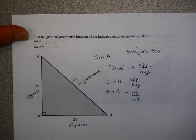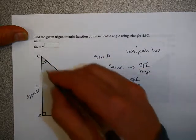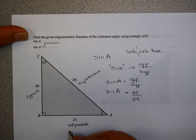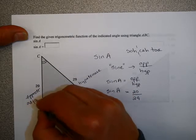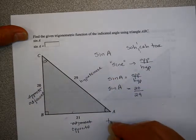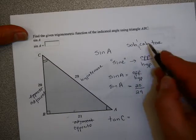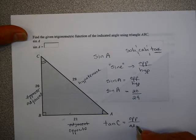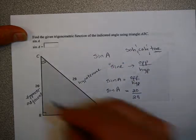Just for fun, let's look at angle C. Imagine you're at angle C — in reference to angle C, this side is the opposite side, and this side is the adjacent side. Let's find the tangent of C. Tangent, from SOHCAHTOA, is opposite over adjacent. Since we're referring to angle C, the opposite side is 21 and the adjacent side is 20.